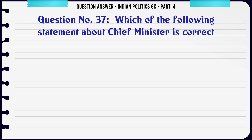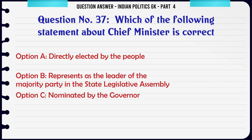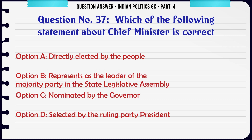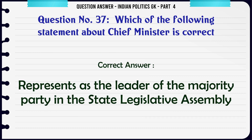Which of the following statements about Chief Minister is correct? A. Directly elected by the people. B. Represents as the leader of the majority party in the State Legislative Assembly. C. Nominated by the Governor. D. Selected by the ruling party President. The correct answer is: represents as the leader of the majority party in the State Legislative Assembly.